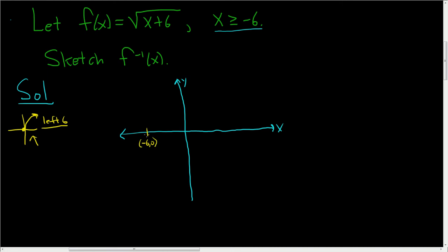So here is negative 6, comma 0, and our square root function will look like this. It crosses the y-axis when x is equal to 0.